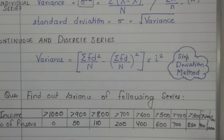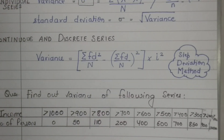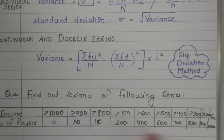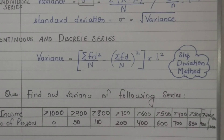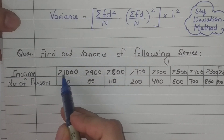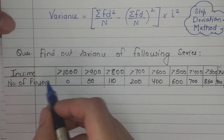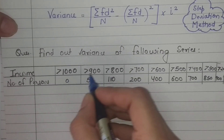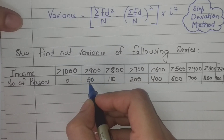We need to re-tabulate the data to make it easy to find the variance. We represent the data in a comfortable, easy-to-understand manner. Persons with income more than 1000 is 0%, more than 900 is 50%, and so we convert this into class intervals.